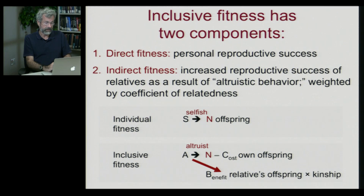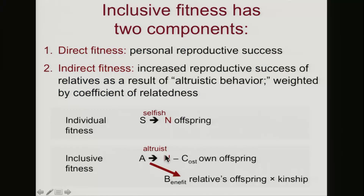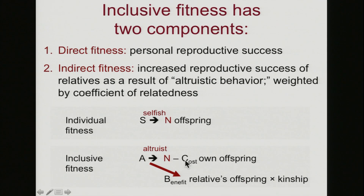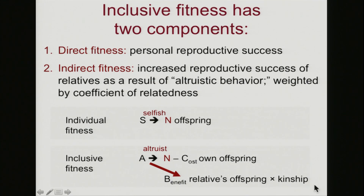But with inclusive fitness, there's another way that you can get more genes into the next generation. You still have your direct fitness, although by being altruistic you're reducing your personal fitness by a certain amount. But what you're doing is replacing your personal fitness with enhanced reproduction of your close relatives. If you can benefit somebody in your close family, they also share the same genes that you do, and that can get more copies of your genes into the next generation.